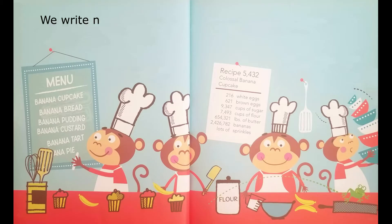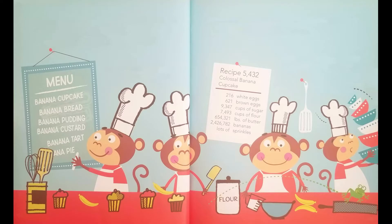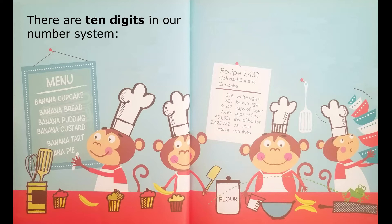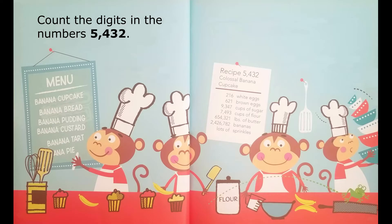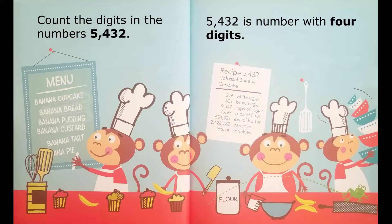We write numbers with digits. There are 10 digits in our number system: 1, 2, 3, 4, 5, 6, 7, 8, 9, and 0. Count the digits in the number 5,432. 5,432 is a number with four digits.